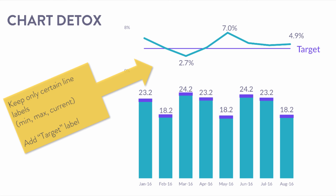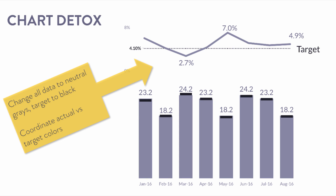I add 'Target' next to that line so people fundamentally understand what it is. Then the really tough part: I've changed all my data to a neutral gray and changed the target to black. I want those different pieces to coordinate between the two charts — that way I don't necessarily need a color legend, and all the information fades to back, allowing us to emphasize what we need.